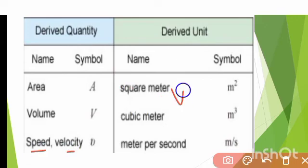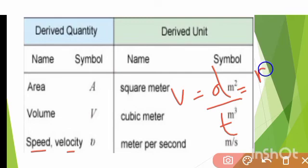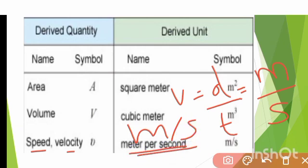If you consider velocity, velocity is displacement by time. Displacement is measured in terms of length, the SI unit is meter. Time SI unit is second. Therefore, the derived unit of velocity is meter per second.